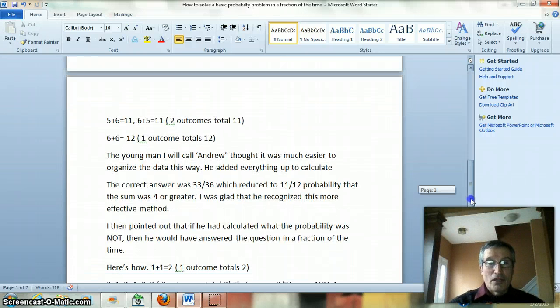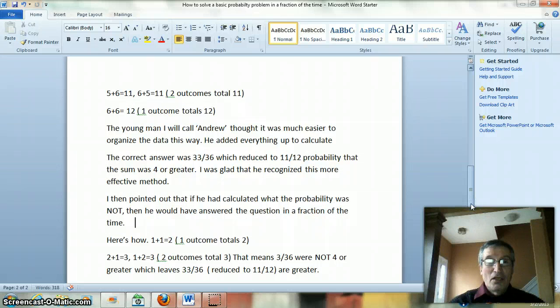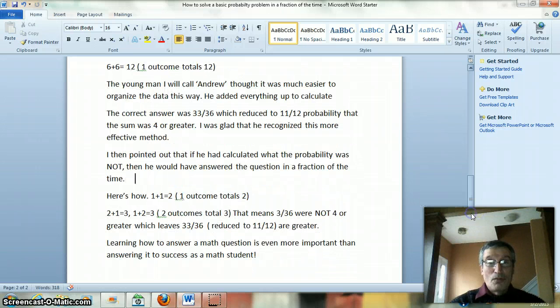This was a much more organized way. The young man I will call Andrew thought it was much easier to organize the data this way. He added everything up to calculate the correct answer which was a probability of 33/36 which reduced to 11/12 probability that the sum was 4 or greater. I was glad that he recognized this more effective method.